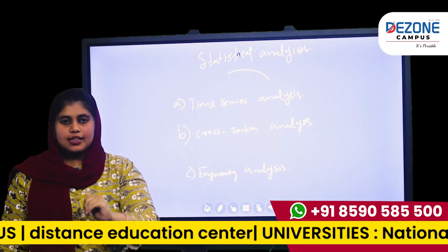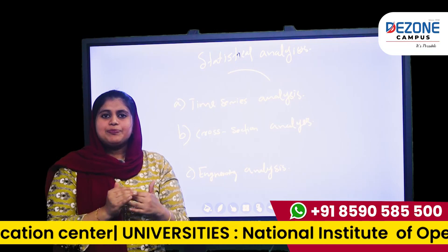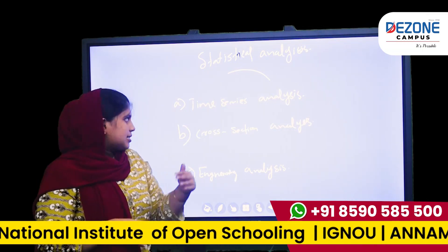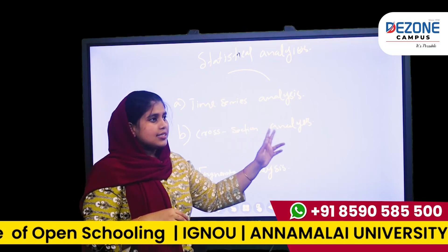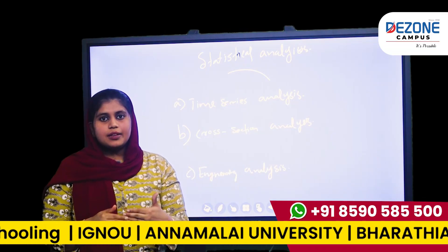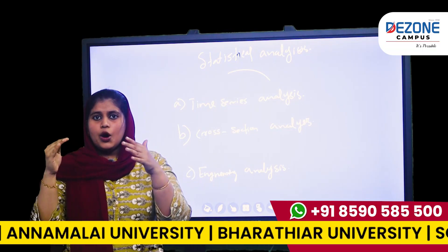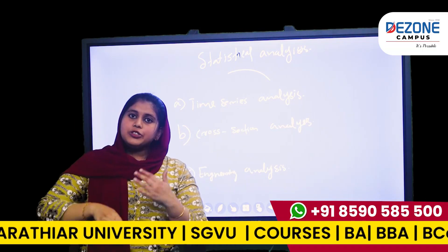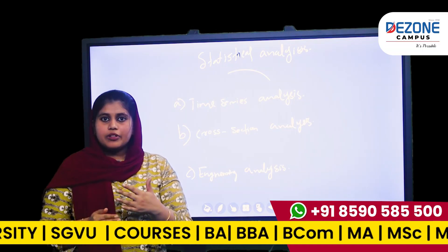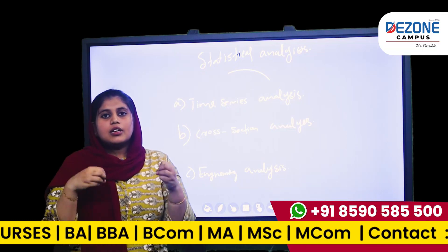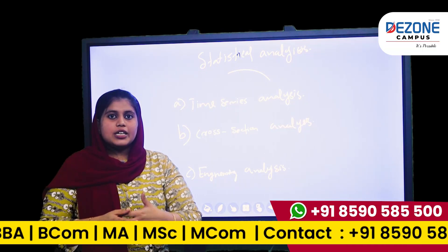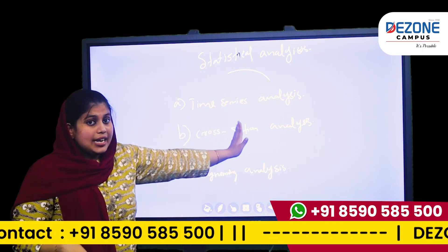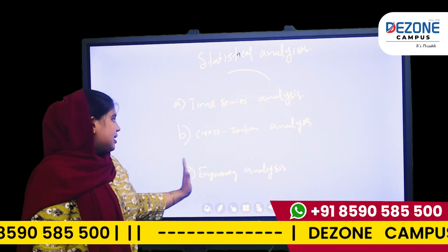Next step is Statistical Analysis. There are 3 types. First is Time Series Analysis. Second is Cross Section Analysis. Third is Engineering Analysis. Time Series Analysis looks at input and output over a long period of time. Cross Section Analysis uses data from the current time period. Engineering Analysis is day-to-day working — how many outputs are produced in one day, one week. Statistical Analysis has three types: Time Series Analysis, Cross Section Analysis, and Engineering Analysis.